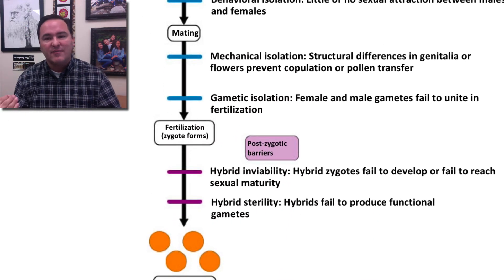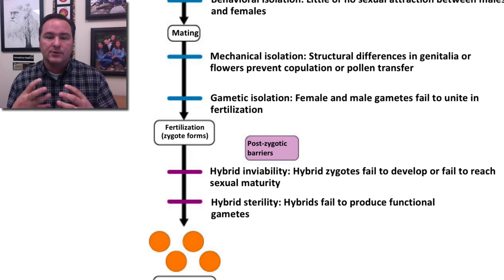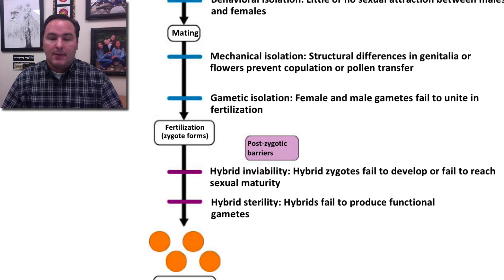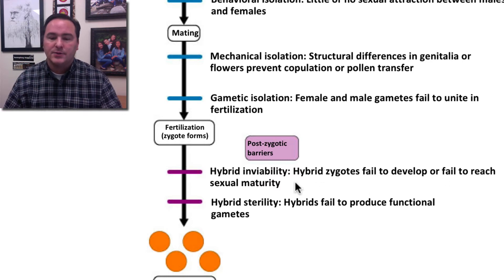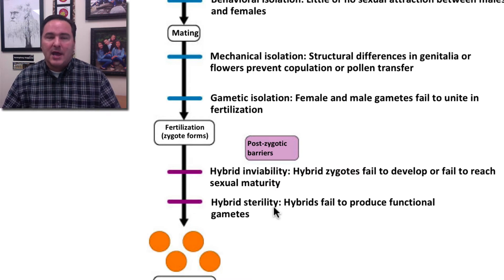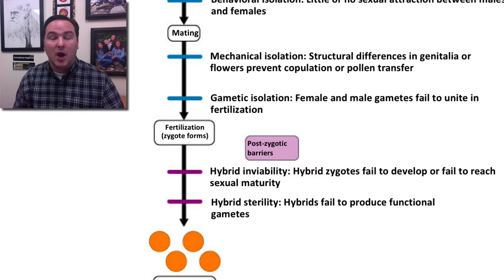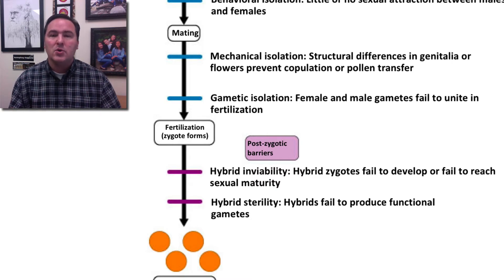If you get through all five prezygotic barriers and a zygote forms, you still aren't guaranteed one species. Hybrid inviability can occur, where hybrid zygotes fail to develop or fail to reach sexual maturity — very common in many hybridization events where offspring simply don't survive to reproduce. Even if the offspring does survive and becomes an adult, it may be sterile. Horses and donkeys produce a mule, but because they have different numbers of chromosomes, the mule is for the most part sterile and cannot produce offspring itself.